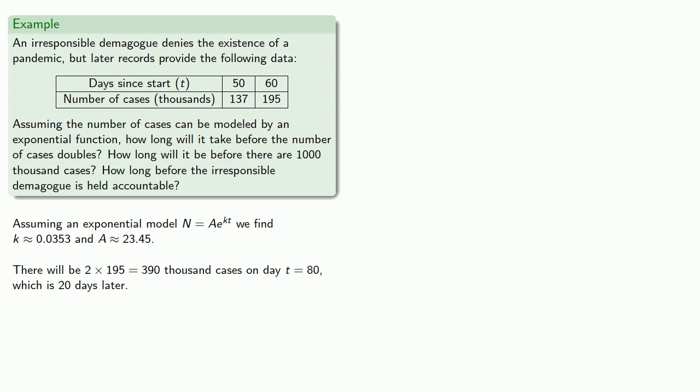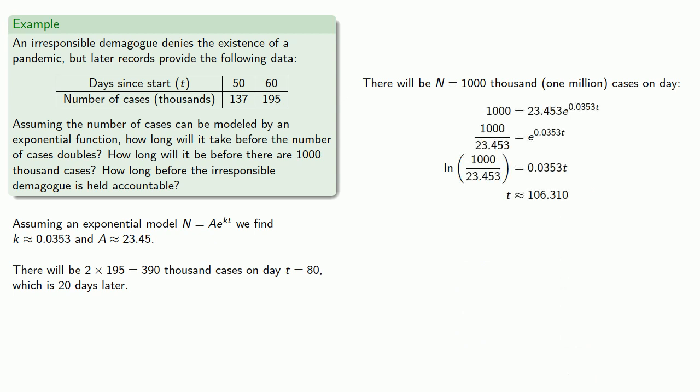How about when there's going to be 1,000,000 cases? Well, that's one million cases, and we have our model, and so we find about day 106, which is in 46 days.